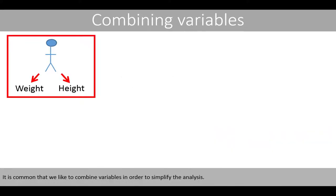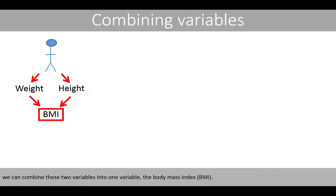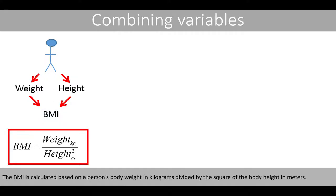It is common that we like to combine variables in order to simplify the analysis. For example, if we have measurements of body weight and height of some individuals, we can combine these two variables into one variable, the body mass index. The body mass index is calculated based on a person's body weight in kilograms divided by the square of the body height in meters.